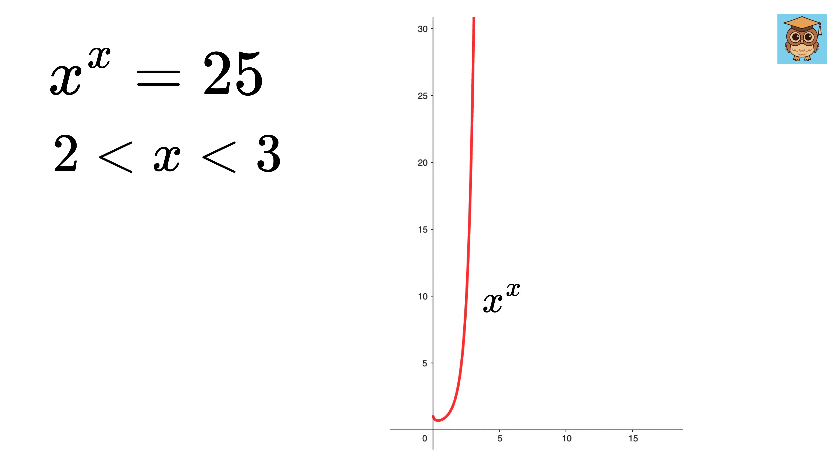Now if we draw a horizontal line which goes from y equals 25, we see that it intersects x to the x at exactly one point. So we have only one real solution.